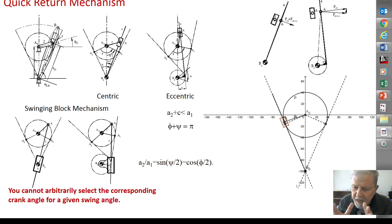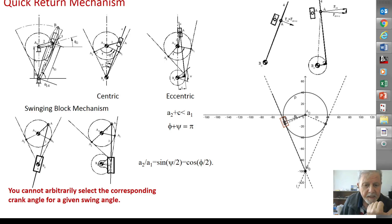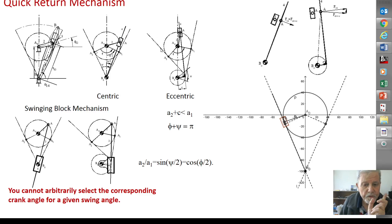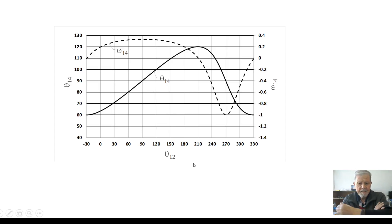So you cannot have a time ratio of one. That is why this is called the quick return mechanism. When moving from a1 to a2 while rotating counterclockwise, the angular swing of the output is 2pi plus phi minus phi, and the output link moves slowly. When moving from a2 to a1, the angular rotation of the input is phi, and the output link rotates fast. For example, for a 60-degree psi, this is the motion curve.